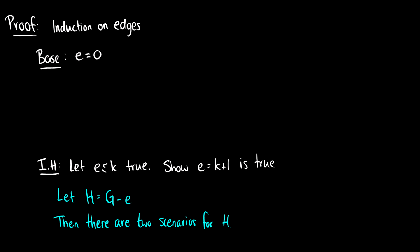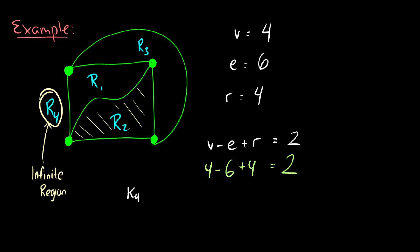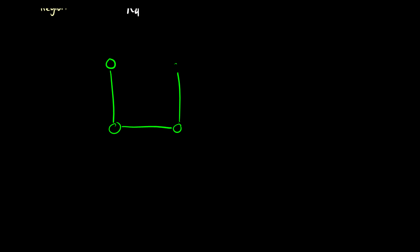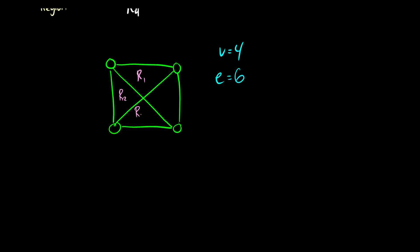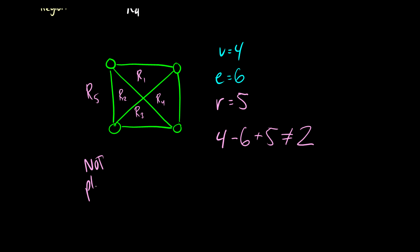Now we should prove it. But before we do that, I want to go over one thing: it has to be a planar embedding. Let's take a look at K4 again, except drawn without a planar embedding. Vertices is still equal to 4, edges is still equal to 6, but now we have 5 regions. So 4 minus 6 plus 5 is not going to equal 2. But this doesn't mean we can conclude the graph is not planar — all it means is that this is not a planar embedding. If the numbers don't come up as equal to 2, we cannot conclude that the graph is not planar.